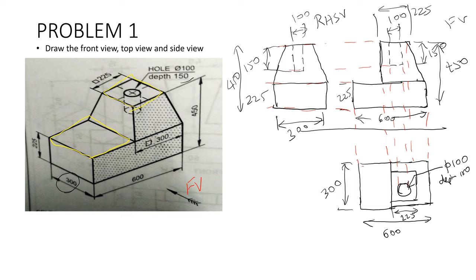This is your front view and this is your top view. In this way, you have to clearly draw the front view, top view, and the side view through freehand sketch. In this, you are only checking about the quadrilaterals, squares, and rectangles — what are the surfaces which are clearly visible. You are drawing through the front view, top view, and then side view.